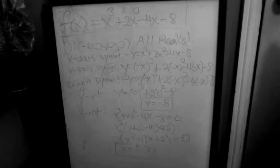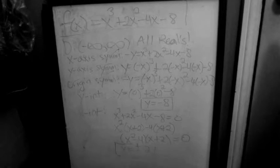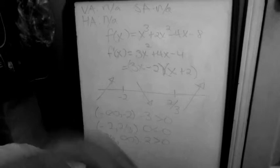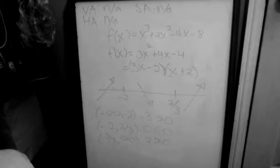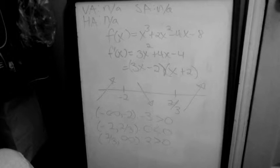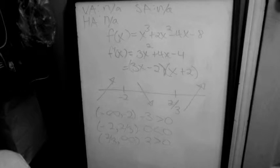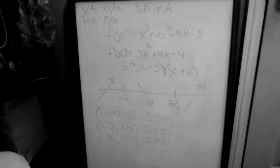Now we're going to jump into the second part of this problem — sketching. It's a long, tedious problem. Regarding asymptotes: being that this is a polynomial, it doesn't have any asymptotes. If it were a rational function, it would probably be a different story.